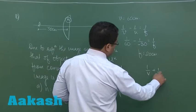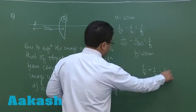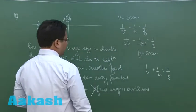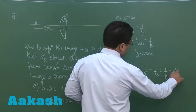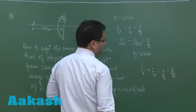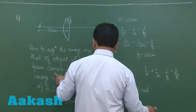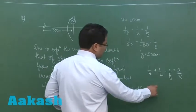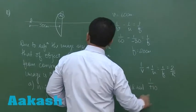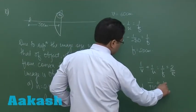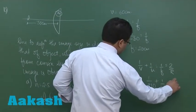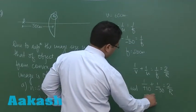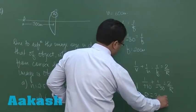1 by v plus 1 by u is 1 by f and that f can be written as 2 by r. Now v is 10 cm away I believe you could see 10 cm away from the lens. So that is plus 10 and the object distance is minus 30 that is 2 by r so simple calculation r would be 30 cm.